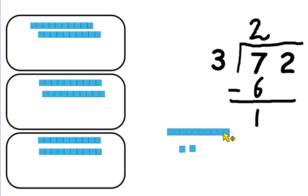Now I've put that 1 there to show that I've got 1 ten left over, and I can bring down the 2. Rather than bringing down the 2, what I'm actually doing is breaking up this 1 ten into units. So now I've got 12 units which I can share out.